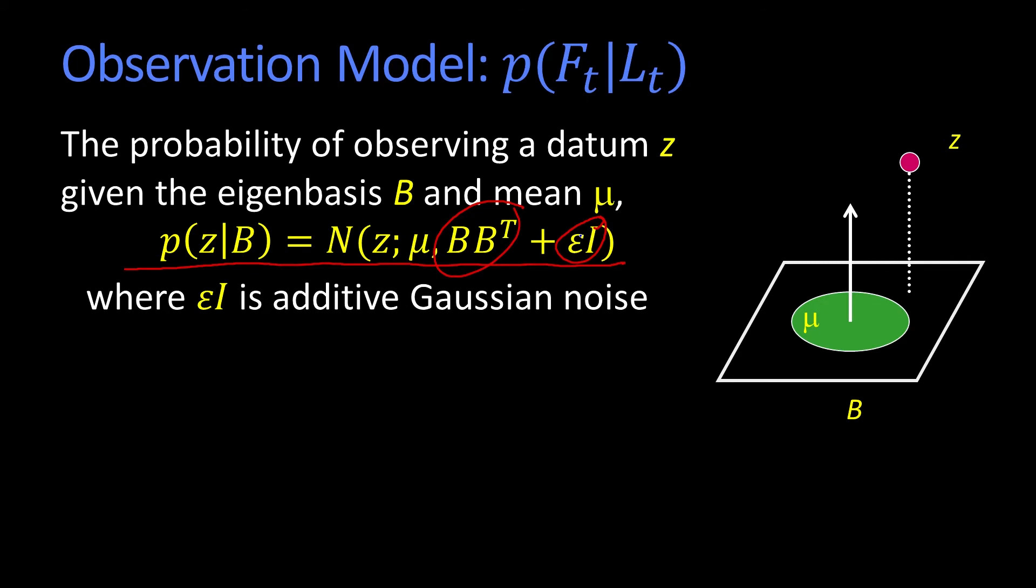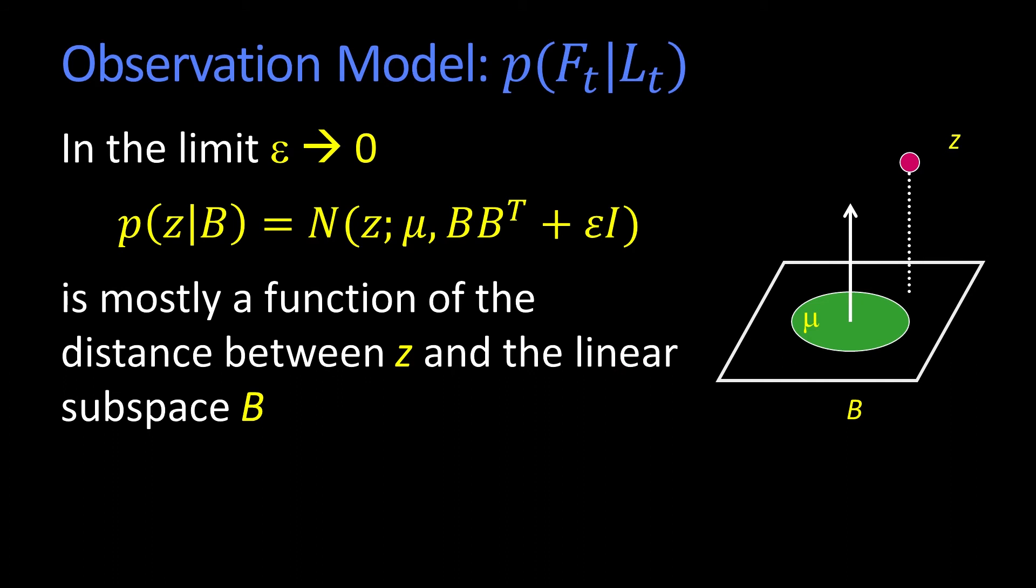Now what happens is, as epsilon goes to zero, or just as epsilon becomes small. Or another way of saying that is that the variance within face space covers most of the faces and there's only a little bit of variance left. What this says is that really,